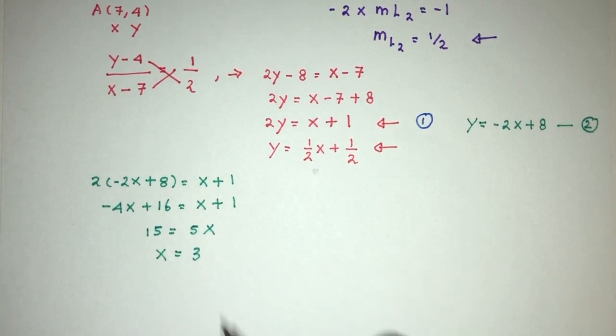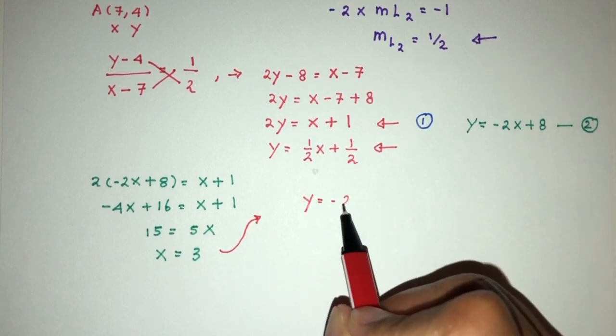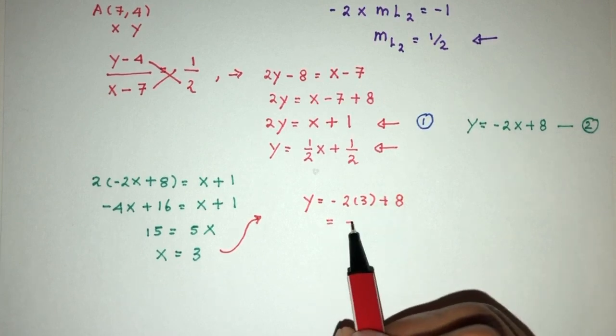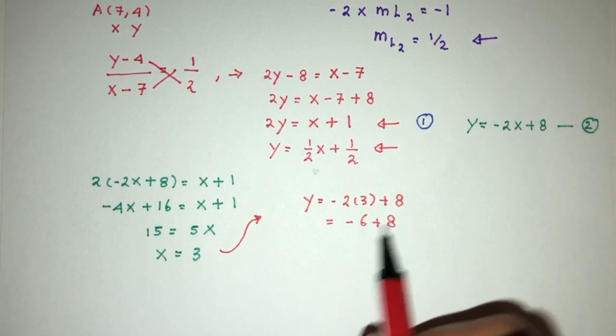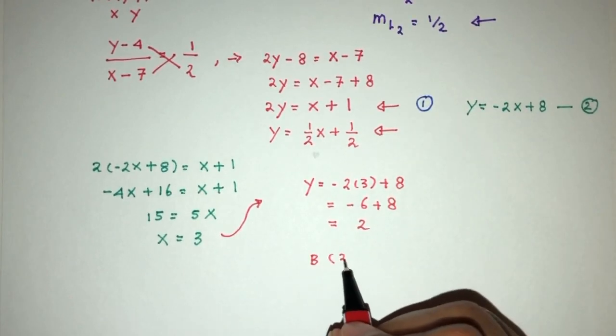Now continue, replace back in your equation number two. So y will be minus 2 times 3 plus 8, that will be minus 6 plus 8, that will be the value of 2. So the point B is found to be (3, 2).